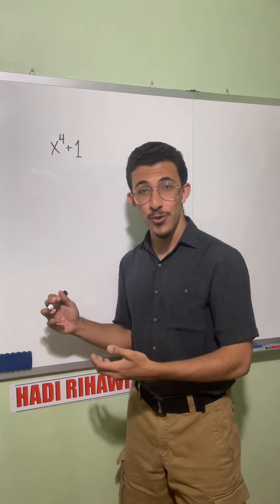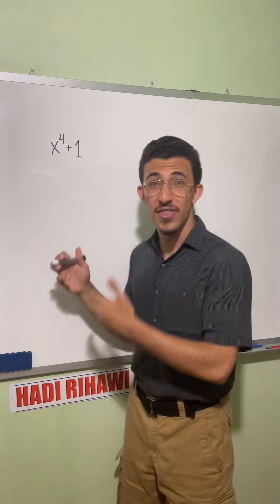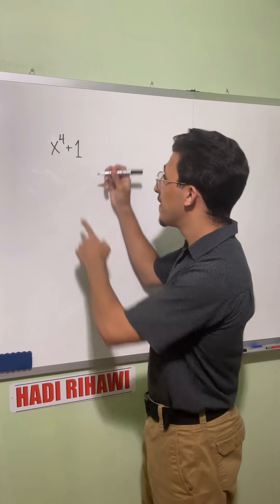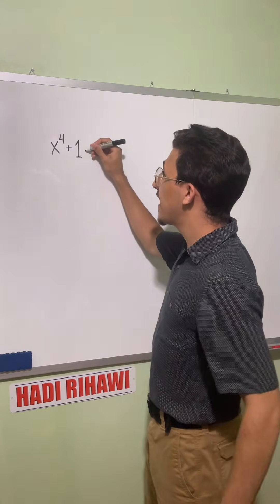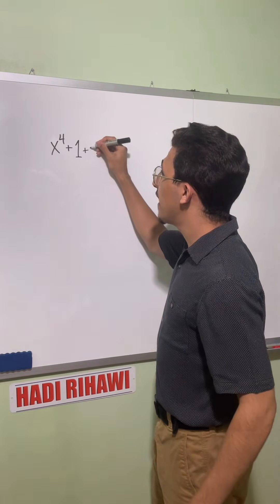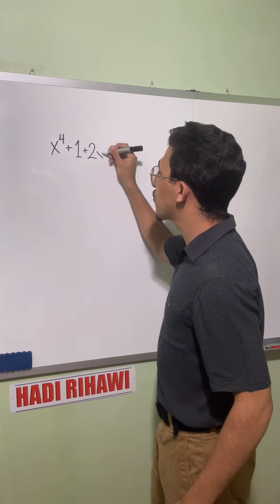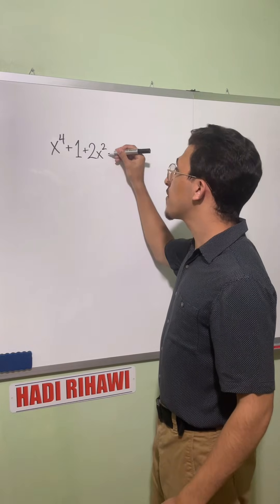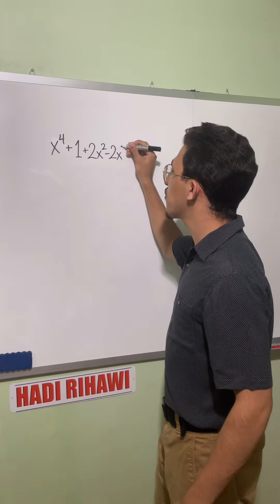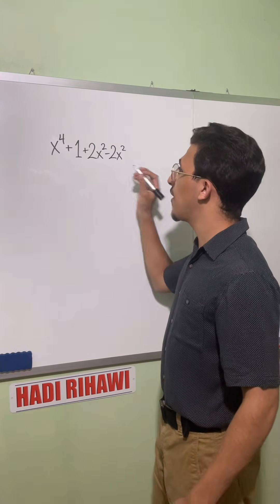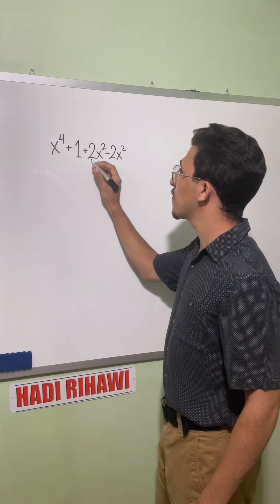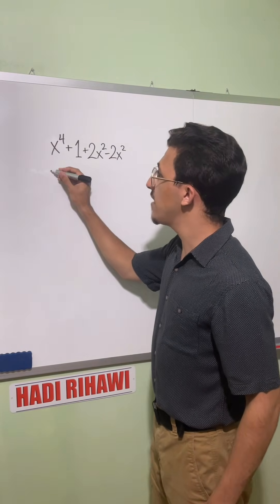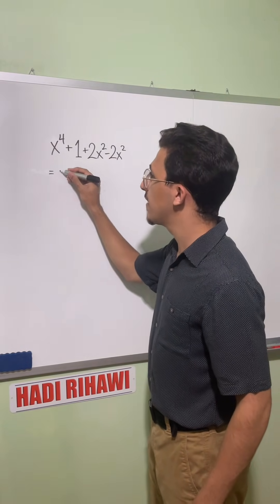The second method — my favorite — is completing the square. We can complete the square by adding two x squared, but then we also have to subtract two x squared to make sure the expression is unaltered, since two x squared minus two x squared is zero.